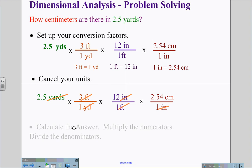When we do the calculation, we're going to multiply the numerators and divide by the denominators. In this case, all the denominators equal one. Therefore, the division is quite simple. We end up with an answer of 228.6 centimeters. But following rules of significant digits, our original question has only 2.5 being two significant digits. So we must round to 230 centimeters for our final answer.